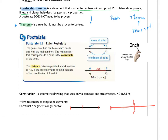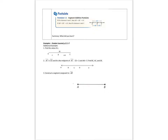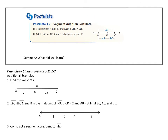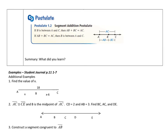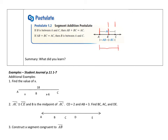Moving on — we have the segment addition postulate. It just means that I can take two segments, add them up, and I will get one larger segment. So in this case, I'm adding up from A to B and B to C, and that gives me the full segment from A to C. So AB plus BC gives me the full AC segment. This is a postulate because we have to be allowed to add these up to make sense.